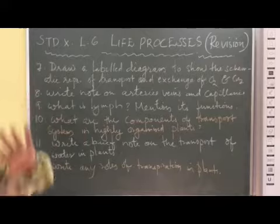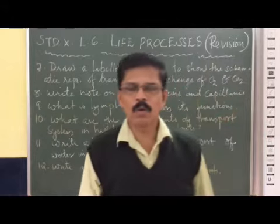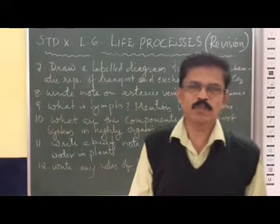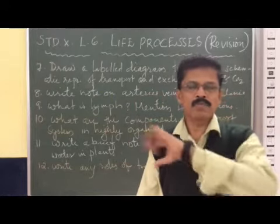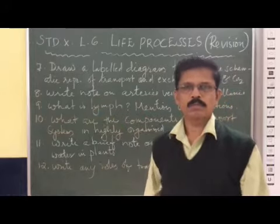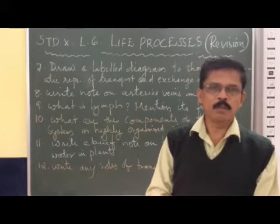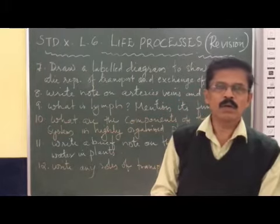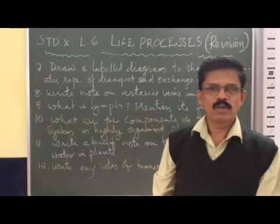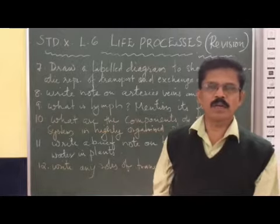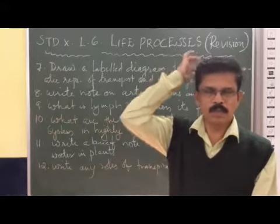In this diagram we have to show the four chambers of the heart. From the upper two chambers, that is the right atrium and left atrium — the right atrium, the vena cava joins; then in the left atrium, pulmonary veins join. From the right ventricle, the pulmonary artery carries deoxygenated blood to the lungs, and from the left ventricle, the aorta carries oxygenated blood to all body parts.